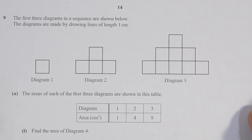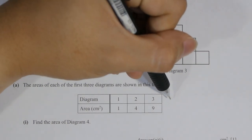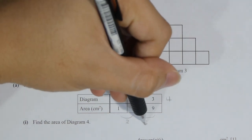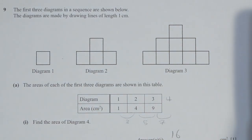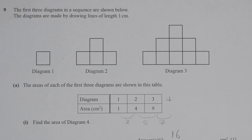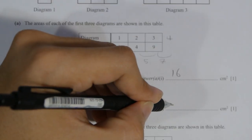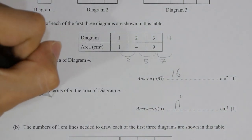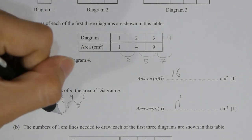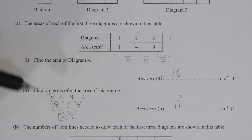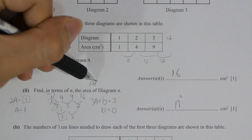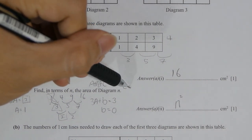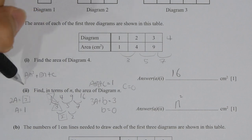For question 9 part A, find the area of diagram 4. The differences from diagrams 1, 2, 3 are 3 and 5, hence the next difference will be 7, so 9 plus 7 equals 16. To find the nth term formula, find the second difference: if it's constant, substitute into the formula. Here 2a equals 2, so a equals 1; 3a plus b equals 3, so b equals 0; a plus b plus c equals 1, so c equals 0. Substituting gives n².